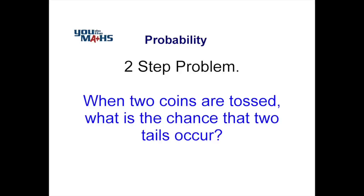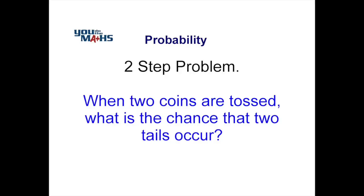In this case, we've got two coins being tossed, and we're looking at the chance that two tails occur. So the first thing we need to do is be very careful to look at the outcomes in this case. What we're going to do is have a look at a way to do that, and we're going to form a tree diagram.